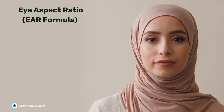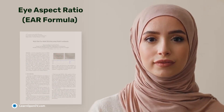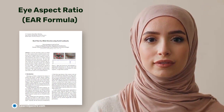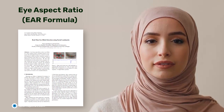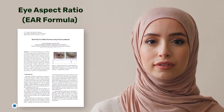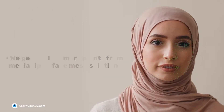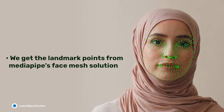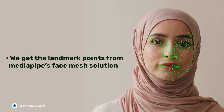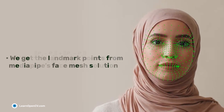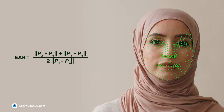And finally, to determine if the eyes are closed or not, we will use the Eye Aspect Ratio or EAR formula proposed in the paper Real-time Eye Blink Detection using facial landmarks. We get the landmark points from Media Pipe's Face Mesh solution and then calculate the EAR value.